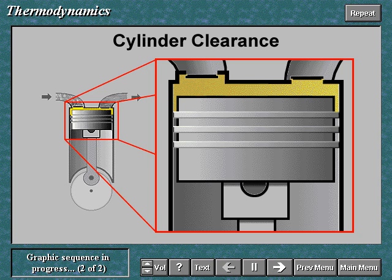The cylinder clearance consists of the volume between the cylinder head and the piston at the end of the stroke, the volume between the cylinder walls and the valves, and the volume due to the difference between the diameter of the piston and the diameter of the cylinder.